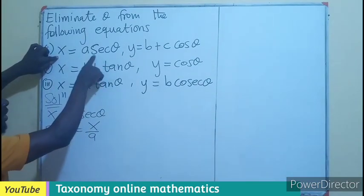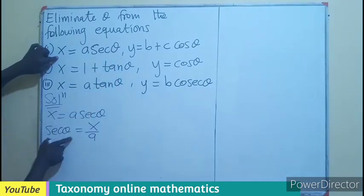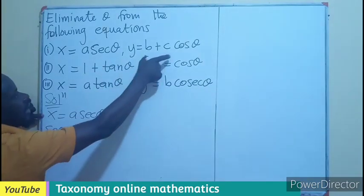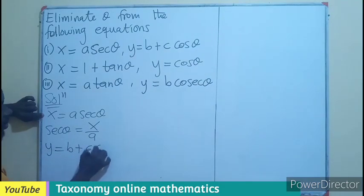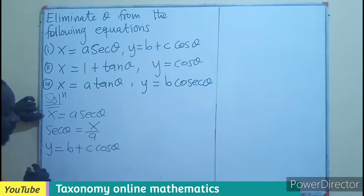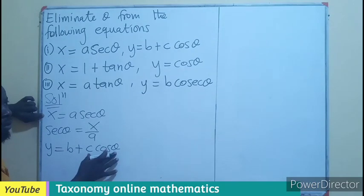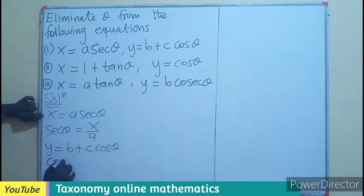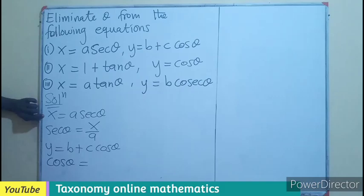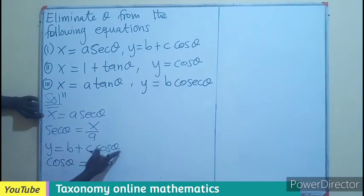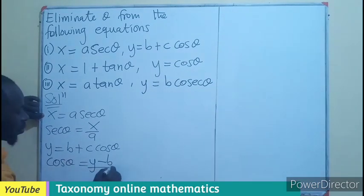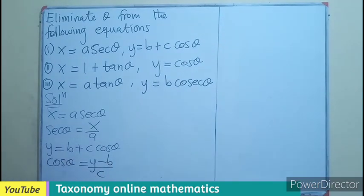If I'm taking this to make sec theta the subject, then from the second part, which is Y equals B plus C cos theta, I want to make cos theta the subject. So cos theta will be equal to Y subtracting B from both sides. But the cos is having C attached, so we divide by C.